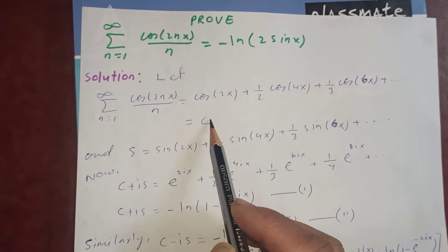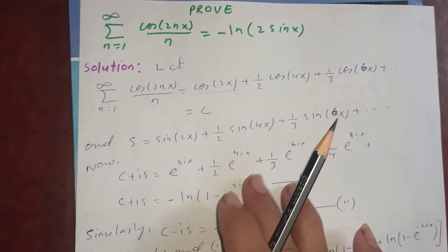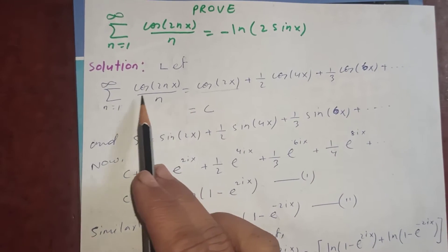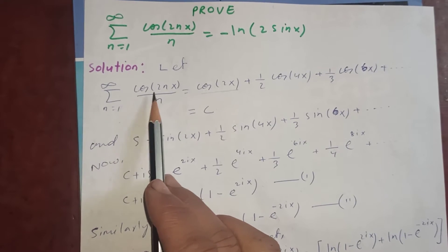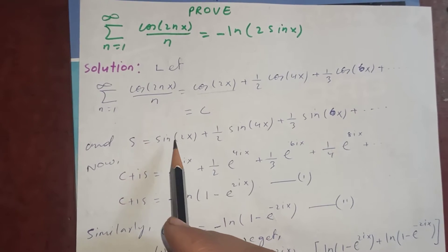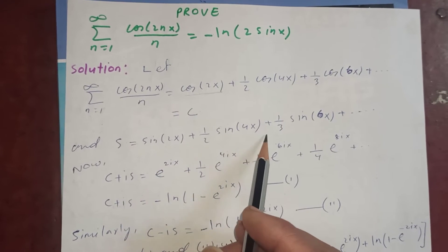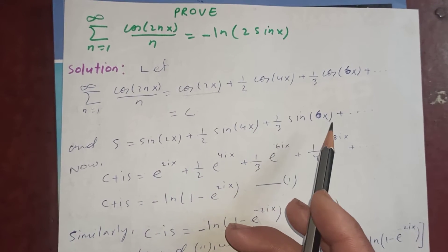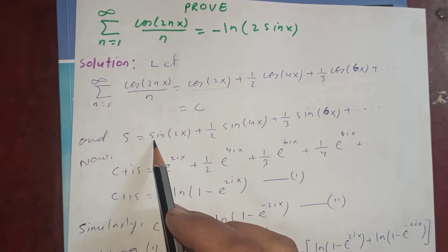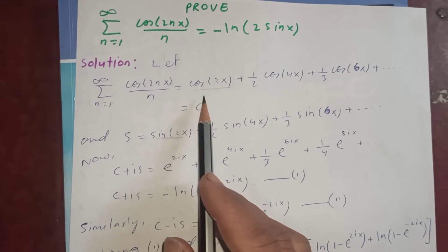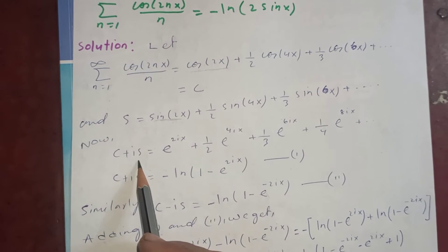Let's call our cosine summation C, and let S be the same thing for the sine series: S is the sum from n=1 to infinity of sin(2nx)/n, which gives sin(2x) plus one-half sin(4x) plus one-third sin(6x) plus and so on. So C plus iS combines these.